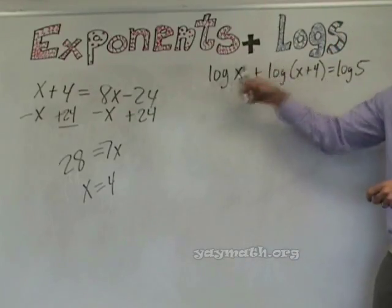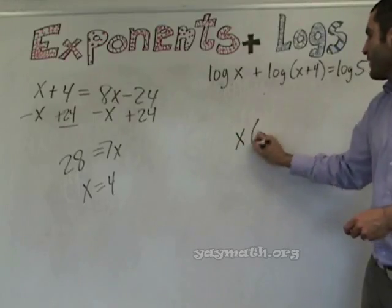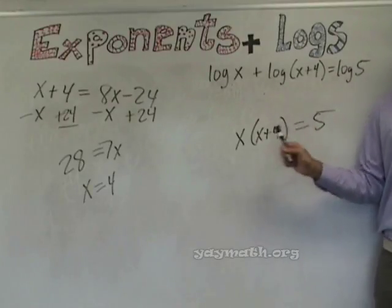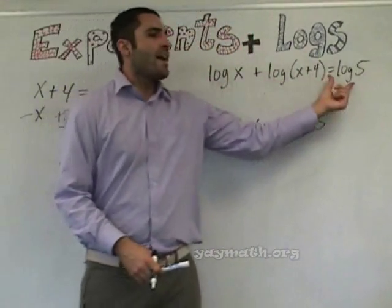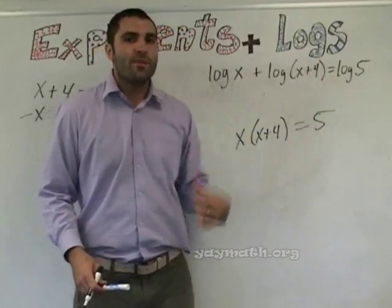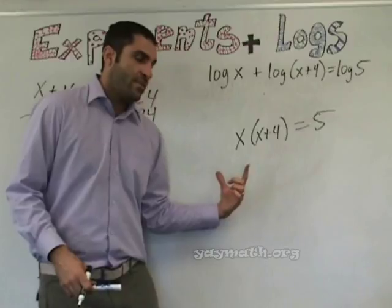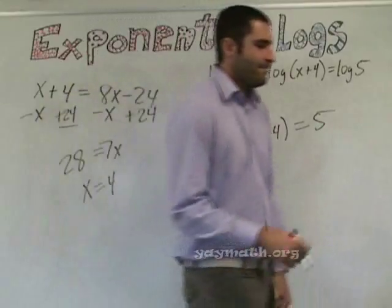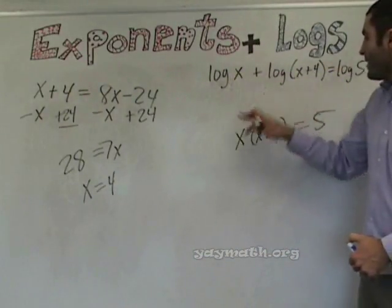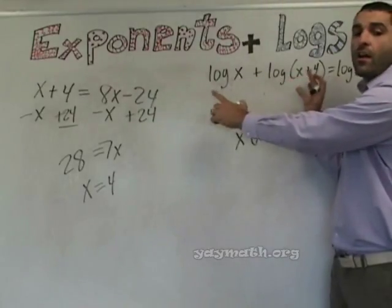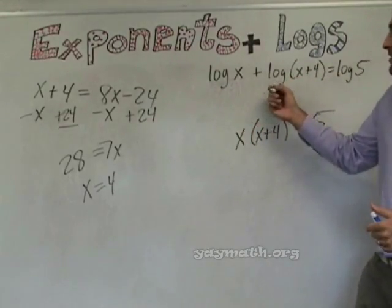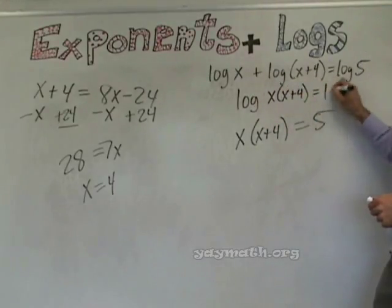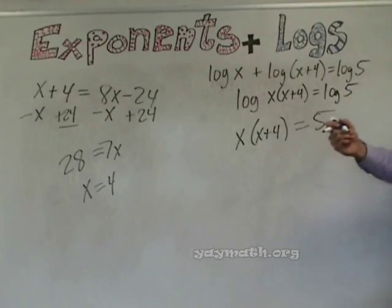What ends up happening — I've seen people cancel logs right away. This approach is correct only because there's a log on both sides. If we did that on the previous problem we'd get it wrong because there's only one log. We have to turn it into an exponent. Why is it not x plus x plus four? Because if you add two logs you write it as a single log with multiplication. So the intermediate step is log of x times x plus four equals log of five. Now we're at liberty to cancel the logs on both sides.